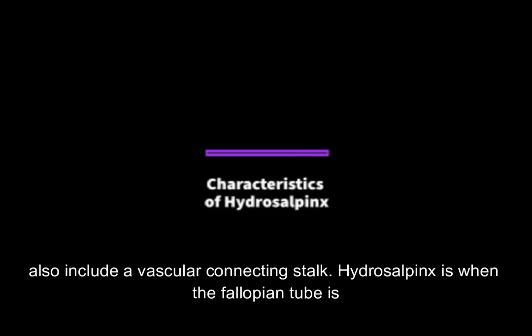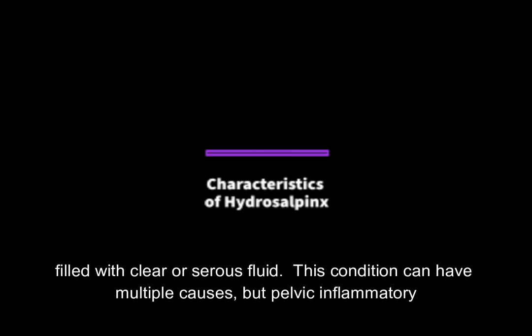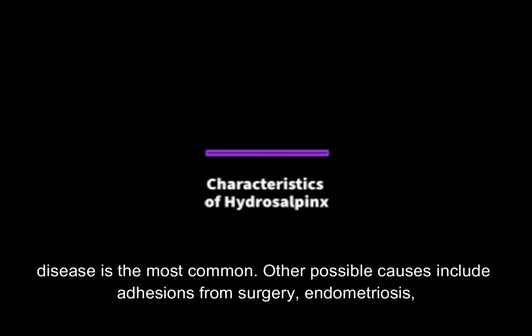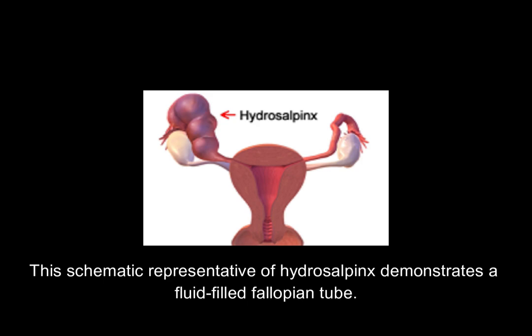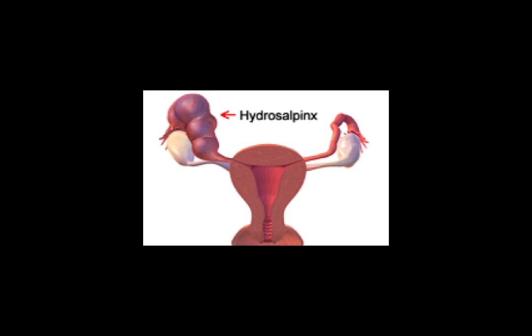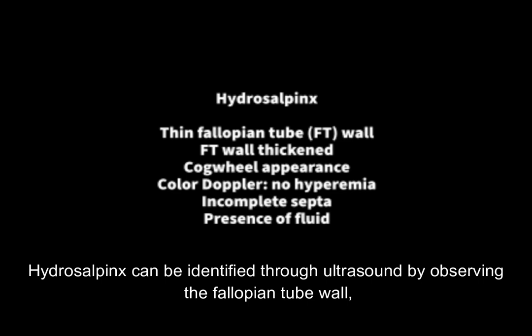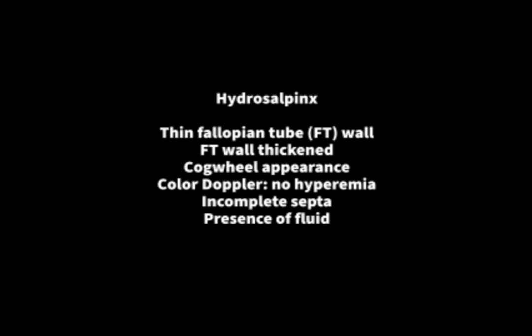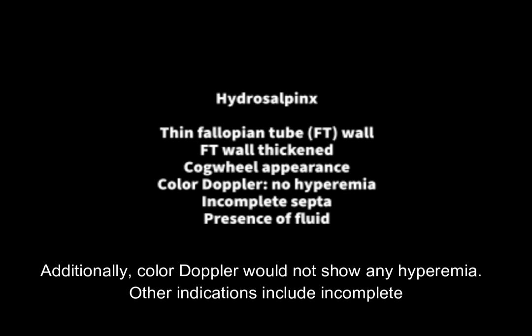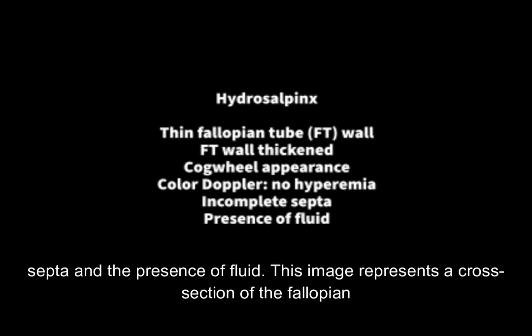Hydrosalpinx is when the fallopian tube is filled with clear or serous fluid. This condition can have multiple causes, but pelvic inflammatory disease is the most common. Other possible causes include adhesions from surgery, endometriosis, tubal ectopic pregnancy, and, in rare cases, cancer of the ovary or other organs. Hydrosalpinx can be identified through ultrasound by observing the fallopian tube wall, which can be either thin or thickened. A cogwheel appearance might also be present. Color Doppler would not show any hyperemia. Other indications include incomplete septa and the presence of fluid.